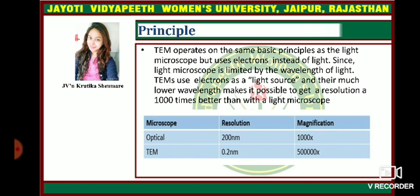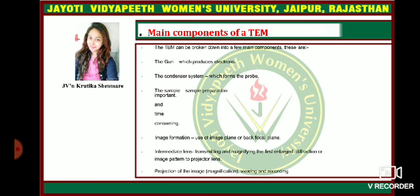TEM operates on the same basic principle as a light microscope but uses electrons instead of light. Since a light microscope is limited by the wavelength of light, TEM uses electrons as a source, and the much lower wavelength makes it possible to get a resolution 1000 times better than with a light microscope. The optical microscope has a resolution of 200 nanometers and a magnification of 1000x, while TEM has a resolution of 0.2 nanometers and a magnification of 500,000x.